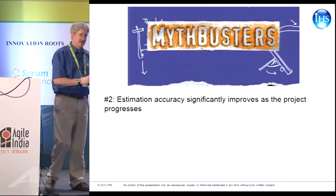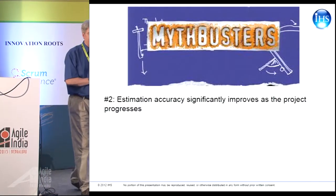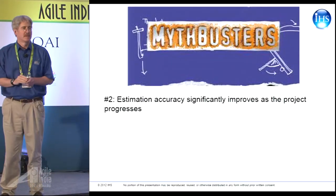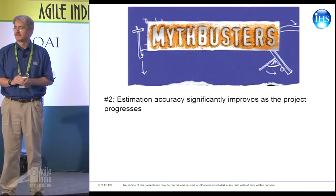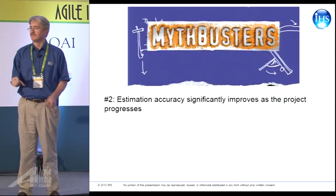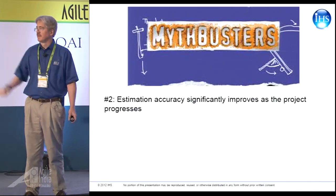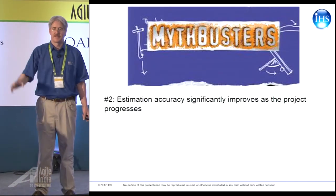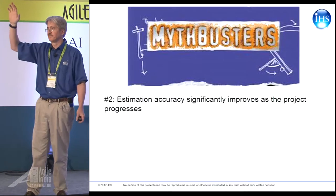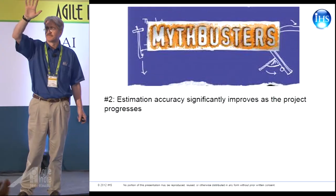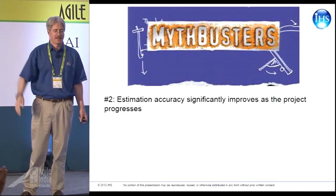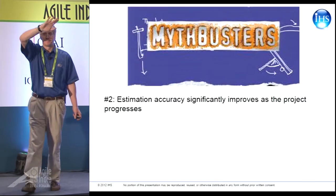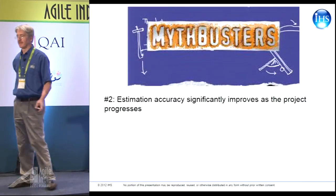Myth two: estimation accuracy significantly improves as the project progresses. How many people think that's confirmed? How many people think that's busted? And how many people think it's plausible?